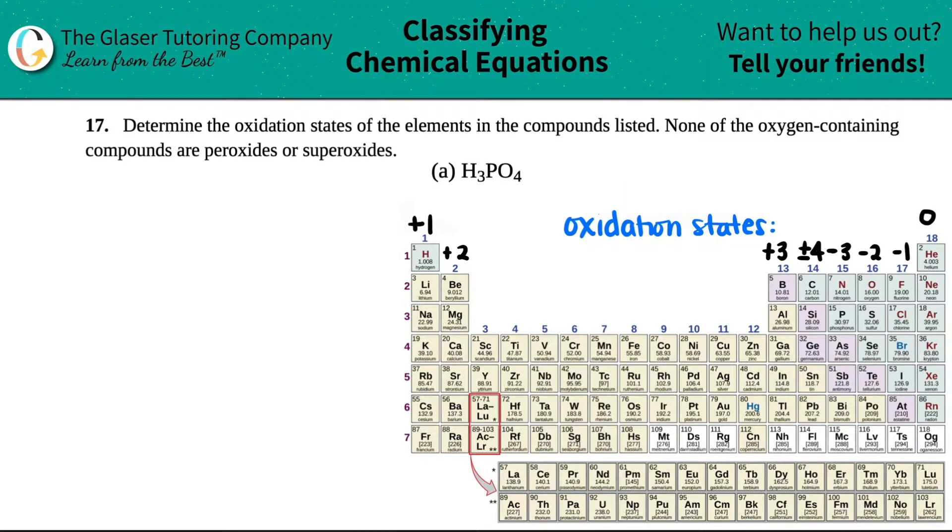Number 17. Determine the oxidation states of the elements in the compounds listed. None of the oxygen-containing compounds are peroxides or superoxides. Okay, so they gave us a little bit of information as far as what oxygen is doing in these questions, so that's good. They were nice. Thank you very much. And so we just have to find out the oxidation states in this compound, H3PO4.